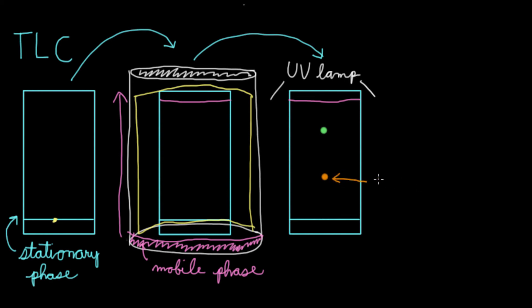As you can see, this one didn't move too far. It means it must have been really attracted to the silica gel. But this one moved a lot more. So this is less polar and more attracted to the mobile phase.